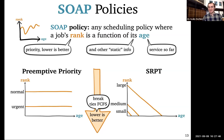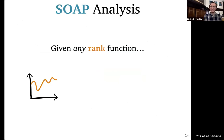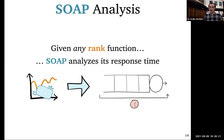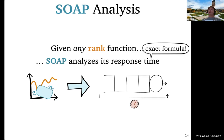SRPT is a SOAP policy where the static information is the job size — the rank starts at the job's original size and decreases at slope one as we serve it more. Gittins is also a SOAP policy, just more complicated. The SOAP analysis takes any rank function and produces an exact mean response time formula, and also gives higher moments so you can bound the tail of response time.